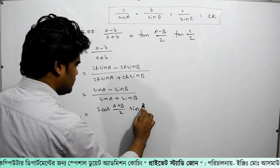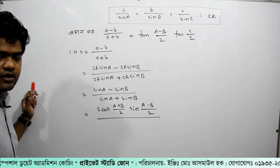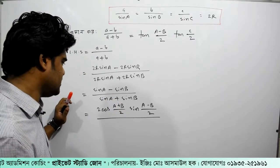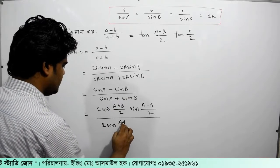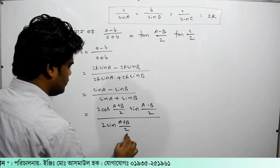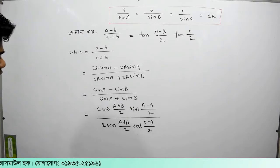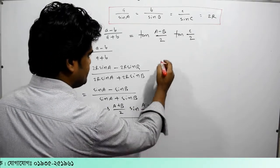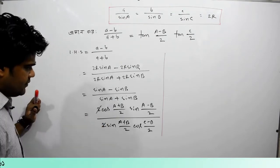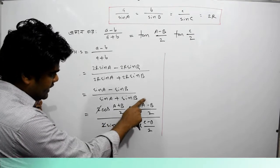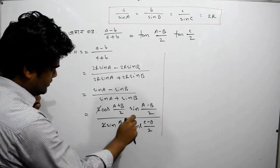sin C minus sin D equals 2 cos((C+D)/2) times sin((C-D)/2). And for the denominator, sin C plus sin D equals 2 sin((C+D)/2) times cos((C-D)/2). We are talking about sin A minus B by 2 and cos sin A minus B by 2.